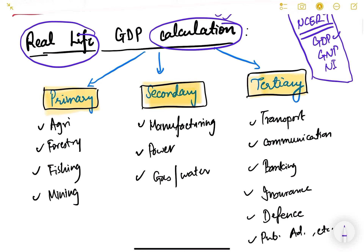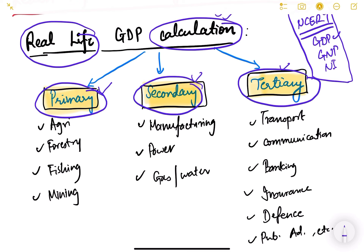First of all, the very basic thing we should understand is that GDP is calculated for three sectors. Any economy is divided into three sectors: the primary sector, the secondary sector, and the tertiary sector. The primary sector consists of agriculture, forestry, fishing, mining, and all these activities.